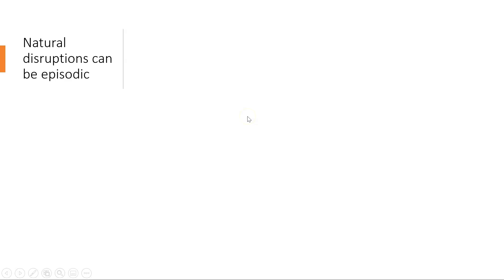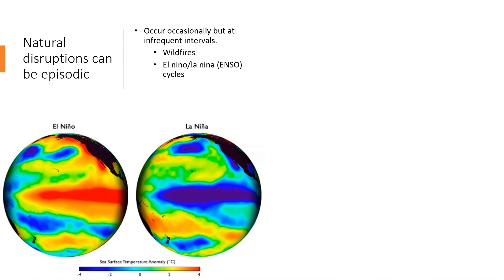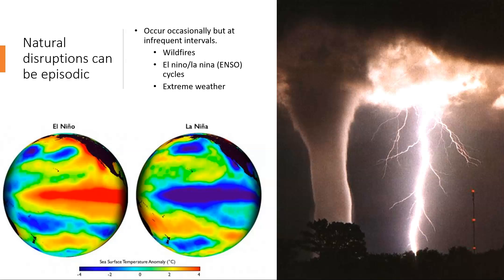Natural disruptions can also be episodic, which means they do occur occasionally but there's no set pattern or period to them. They just occur occasionally at infrequent intervals. Those are things we're commonly familiar with, like wildfires. El Nino and La Nina are the ENSO cycles. We'll talk about those more later this year, but they're periods when the ocean surface temperature is warmer versus colder, and those have climatic implications for certain parts of the world. But those don't occur on a regular period, maybe every two years to every seven years.